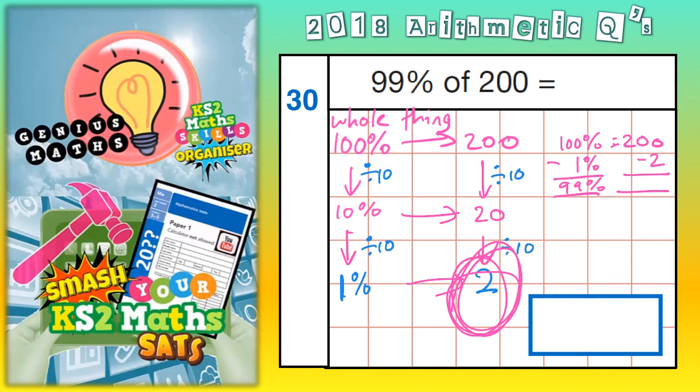And 200 subtract 2, you can do that in your head, is going to be 198. So the final answer to this question is 198.